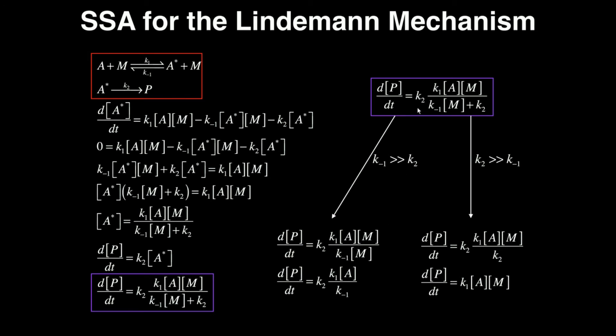So what I get is I still have this K2 out in front, but I have K1[A][M], and then I only have this first term in the denominator because K2 is so small. So K-1[M]. And again, the only reason I was able to completely neglect this is because it's added on. If it's multiplied, I can't neglect it, but it's added so I can get rid of it. And that gets me this right here.